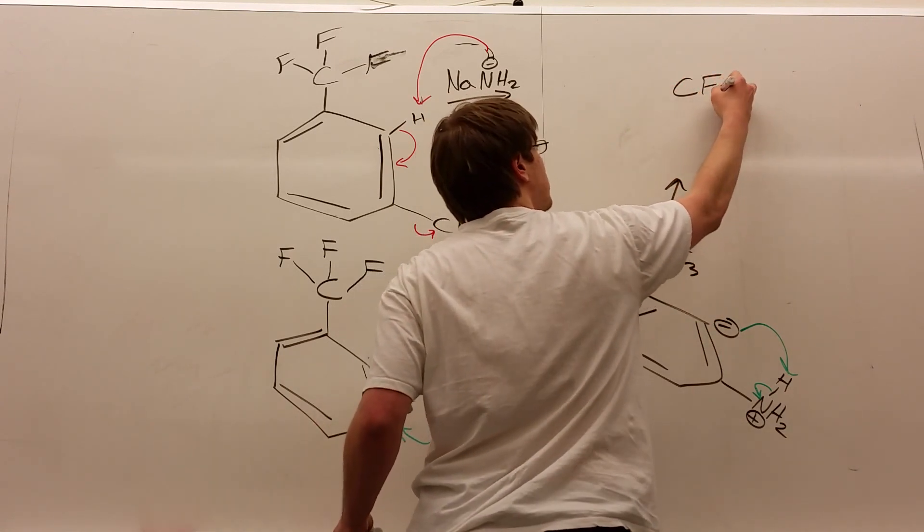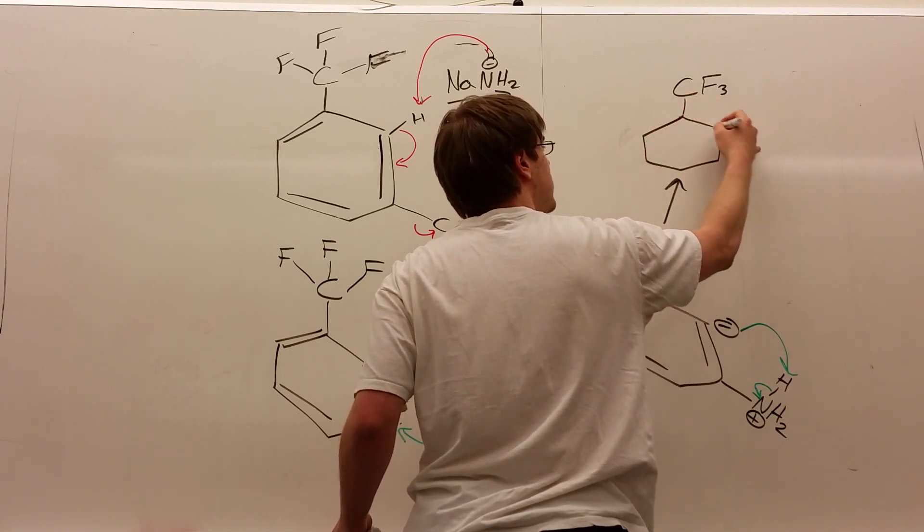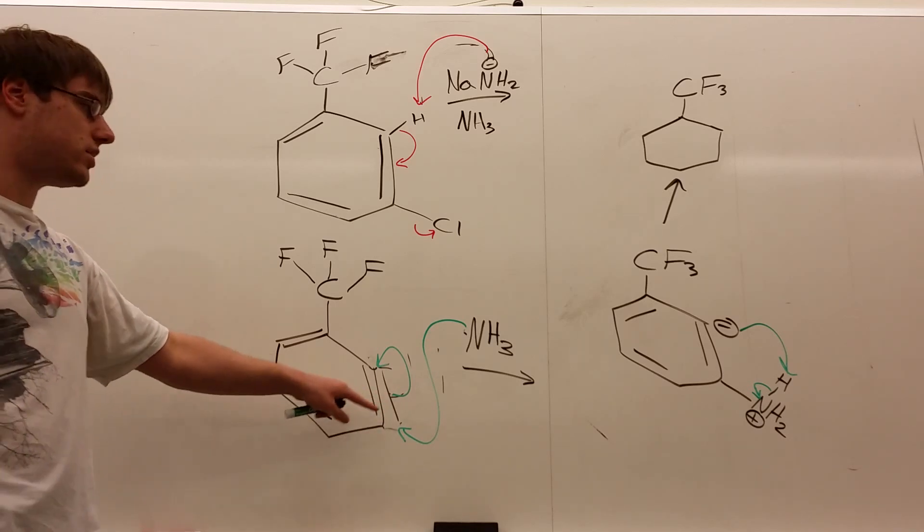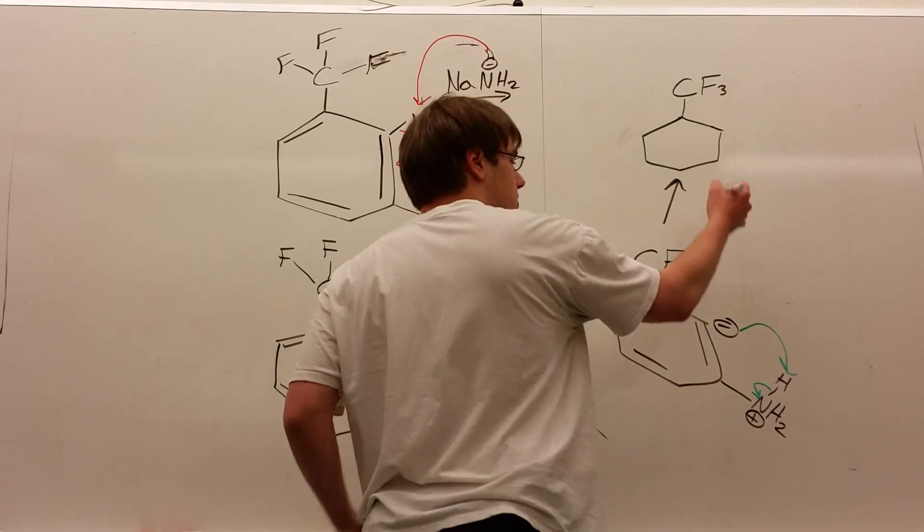And so, again, in the case of CF3, it's not explained by resonance. In CF3's example, it's explained by getting the negative charge that's the result of what happens after the attack. You want to make that negative charge as close to your withdrawing group as possible.